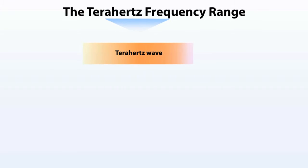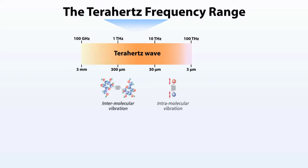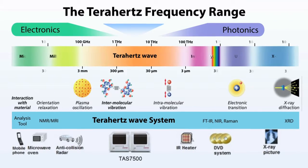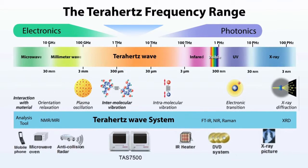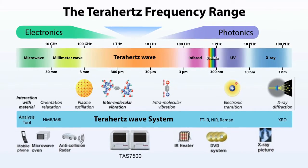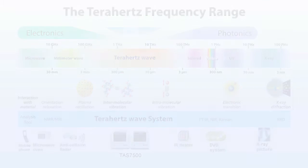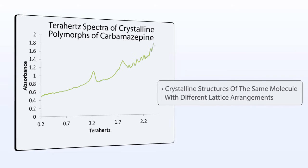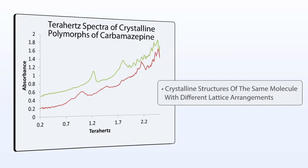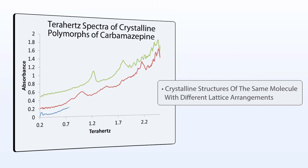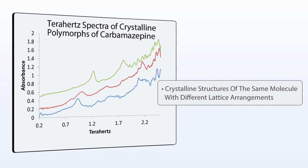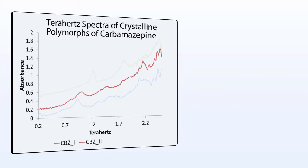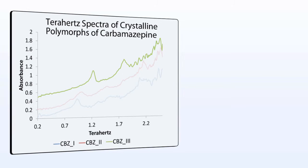Intermolecular interactions such as crystalline phonon vibrations and hydrogen bonding dominate the terahertz frequency range, which lies in the gap between the microwave and infrared regions. Polymorphs are crystalline structures of the same molecule with different lattice arrangements. The terahertz spectra of polymorphs often exhibit unique fingerprints, as shown here for the API carbamazepine.